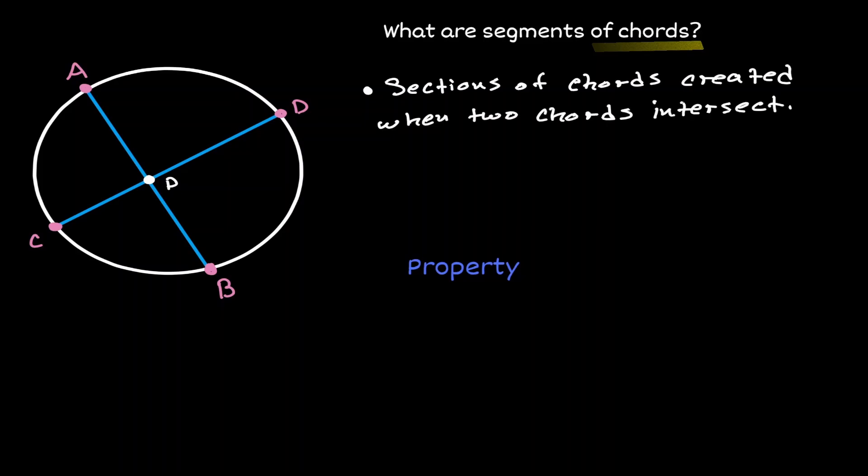Let's give some names to the segment chords. The line segment CP, let's call it T. The line segment PD, let's call it U. The line segment AP, let's call it R. And the line segment PB, let's call it S.